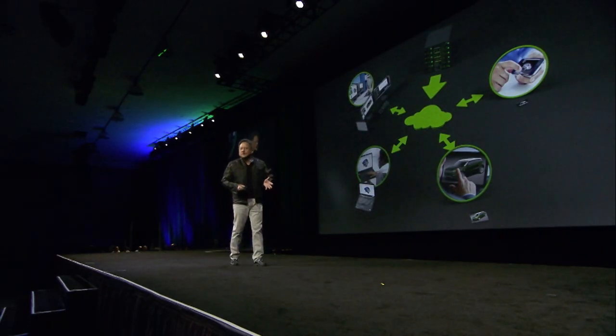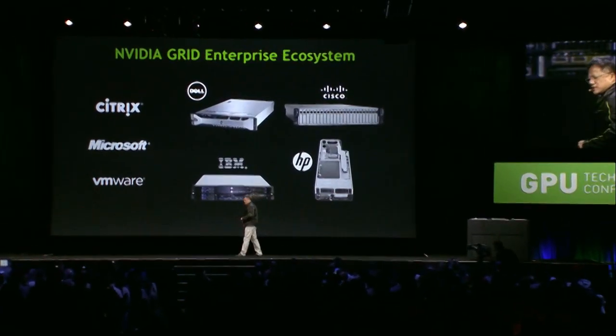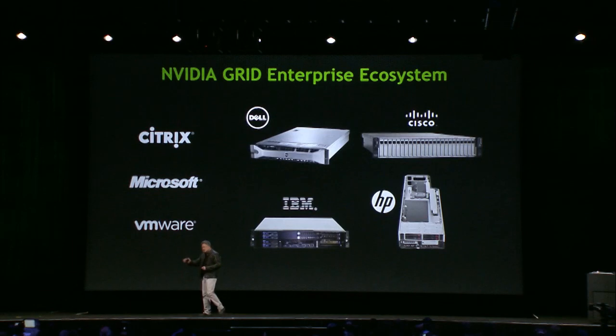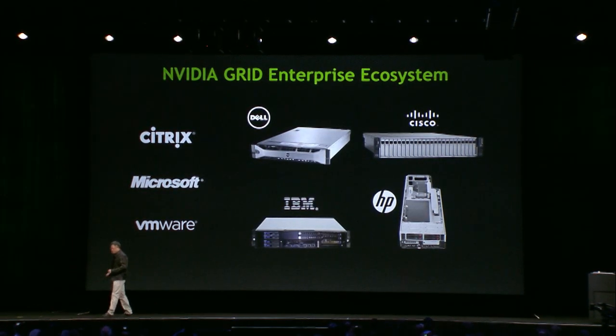We described the technology last year. And this year, I'm pleased to announce that nearly all of the major players of the enterprise computing world are now partners and are in production. Citrix is in production. Microsoft is in production. VMware is in production. The NVIDIA Grid processors are designed into specialized servers from Cisco, Dell, IBM, and HP. And there are 75 large-scale trials happening right now as we speak.